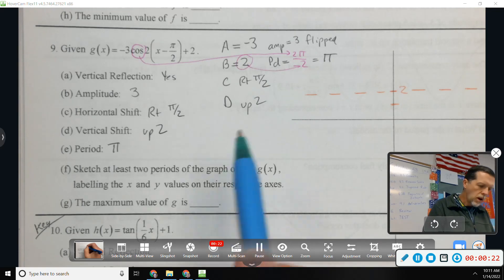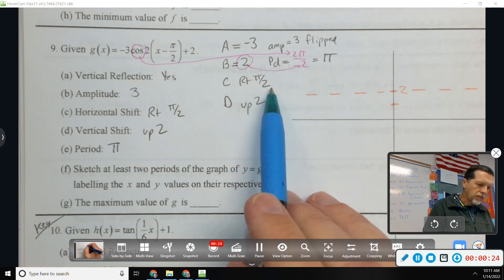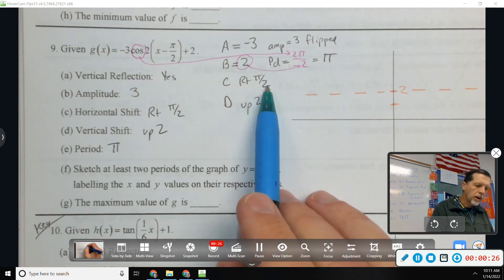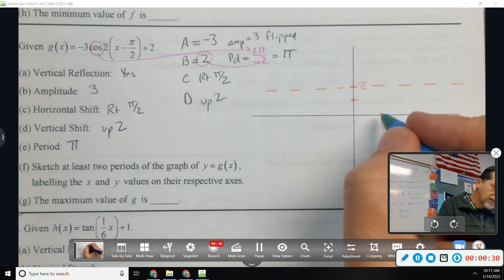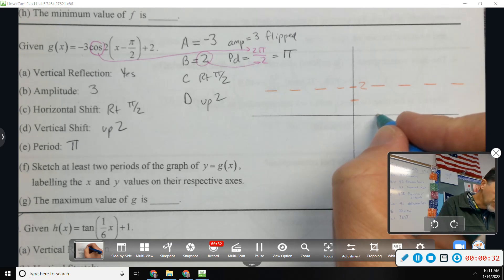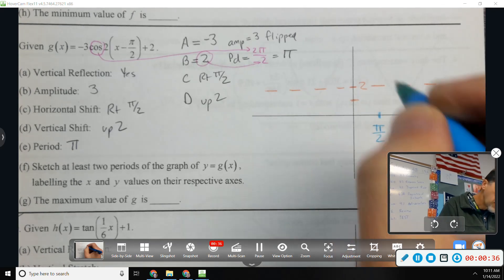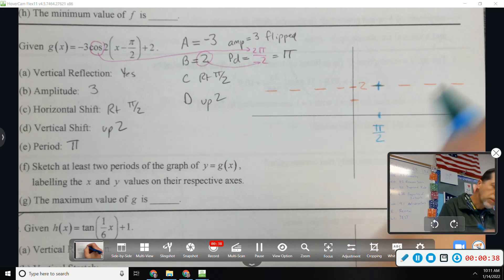Right pi over 2. Let's be careful here because I want to go right pi over 2, but the period is pi. So I have to kind of keep those things in mind together. So I don't want to go too far for pi over 2. There's my new starting point.